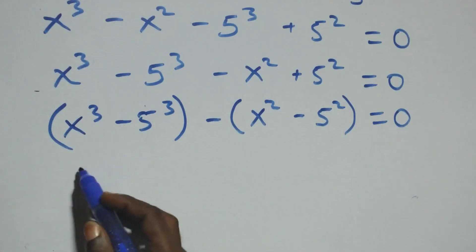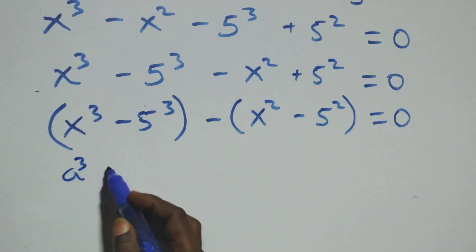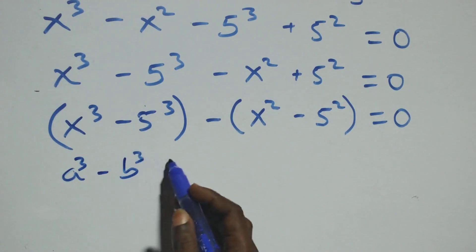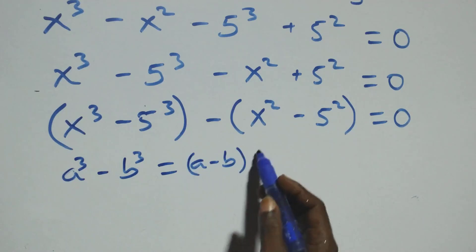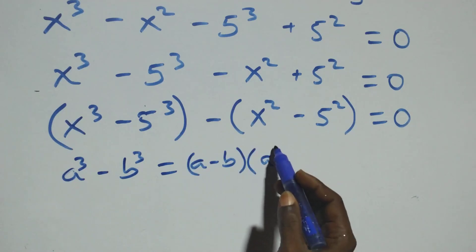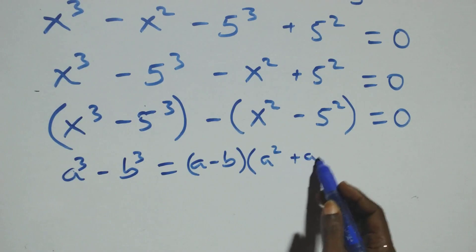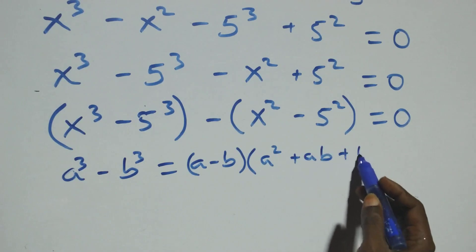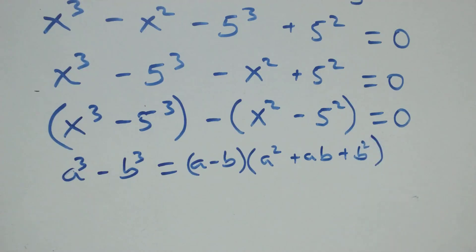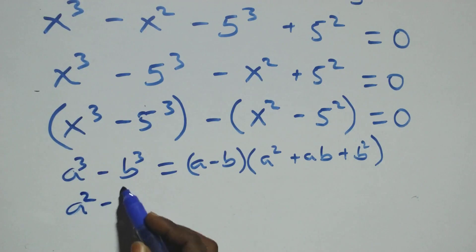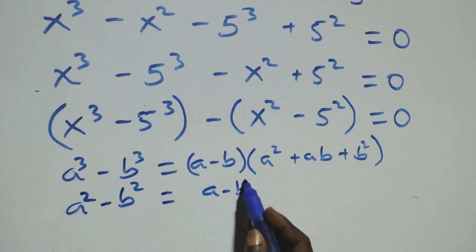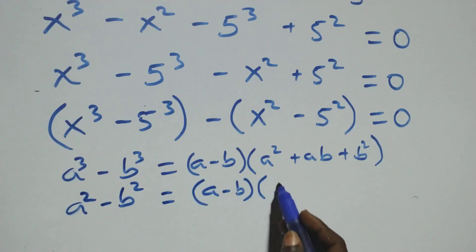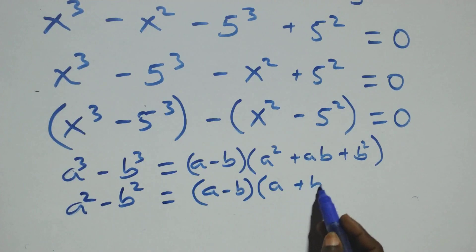The first bracket follows the identity a raised to the power 3 minus b raised to the power 3, which factors as a minus b, times open bracket a squared plus ab plus b squared. And also this bracket follows when we have a squared minus b squared, which factors as a minus b, times open bracket a plus b.